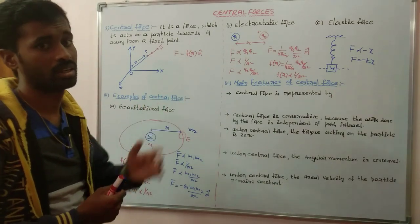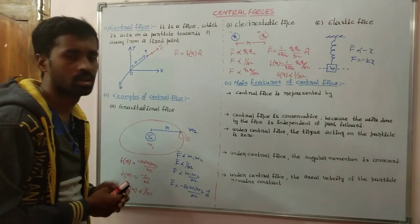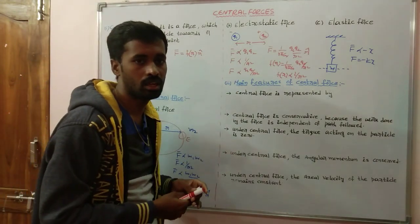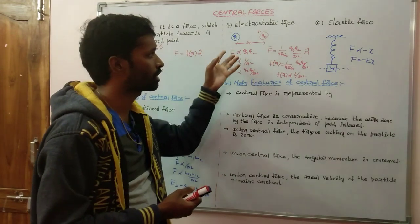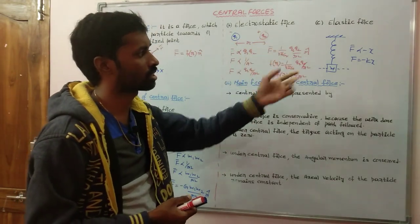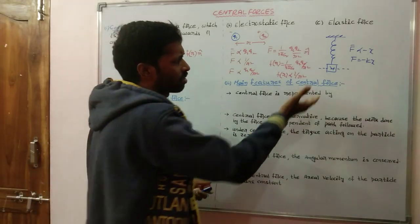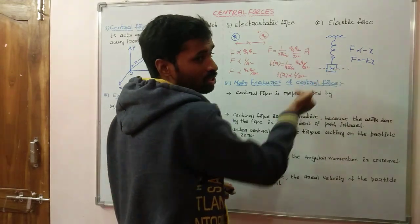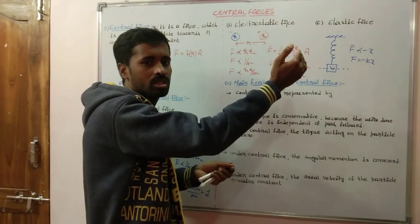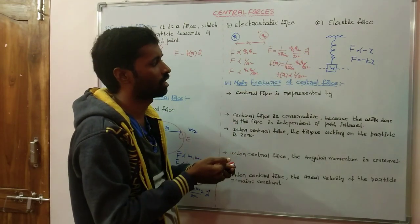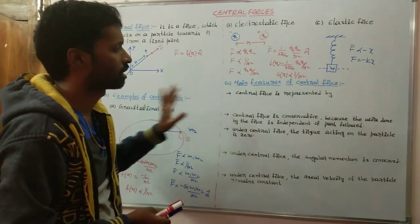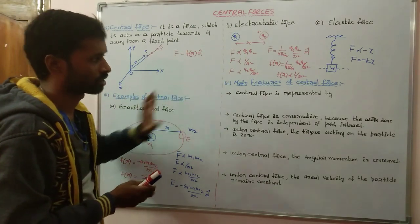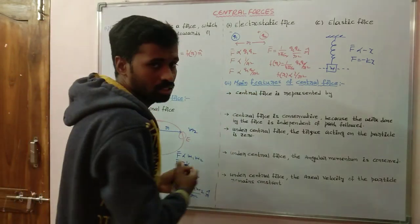To summarize, the examples of central forces are: gravitational force — the force existing between sun and earth; electrostatic force — the Coulombic repulsive or attractive force; and elastic force — the best example being simple harmonic motion, which is to-and-fro motion about its mean position. In all these cases, a force acts toward or away from a central point. This concludes the brief introduction about examples of central forces.